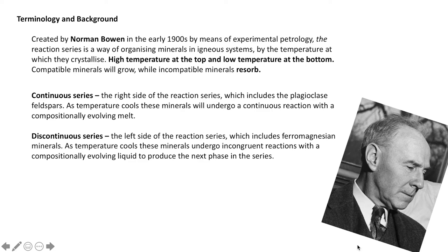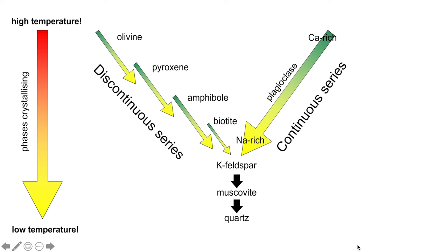Here's a really simplified example of Bowen's phase diagram. We have temperature decreasing on the left hand side, we have our discontinuous series of olivine, pyroxene, amphibole, biotite, and our continuous series of calcium-rich plagioclase anorthite to sodium-rich plagioclase albite. And as the system becomes really felsic we start crystallizing things like K-feldspar, muscovite and quartz.